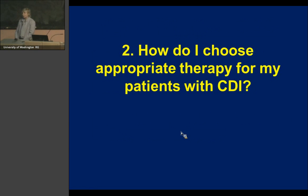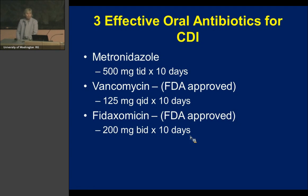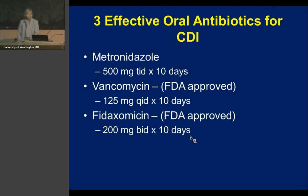There are three effective oral antibiotics for C. difficile: metronidazole 500 milligrams three times a day for 10 days; vancomycin 125 milligrams four times a day for 10 days; and fidaxomicin 200 milligrams twice a day for 10 days. Vancomycin and fidaxomicin are both FDA approved, although metronidazole is widely used.